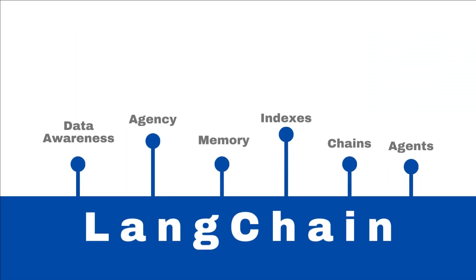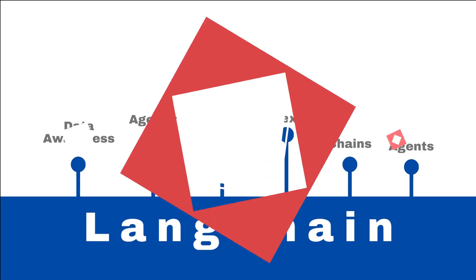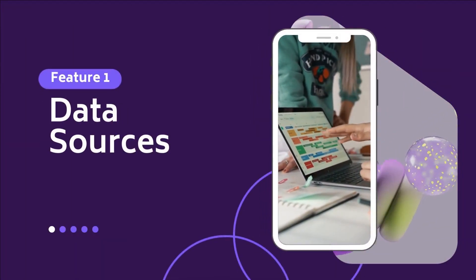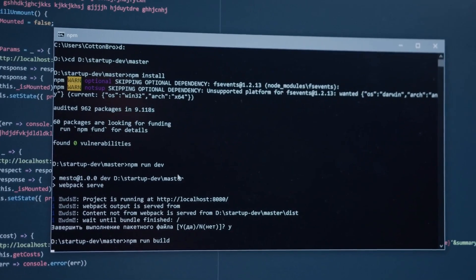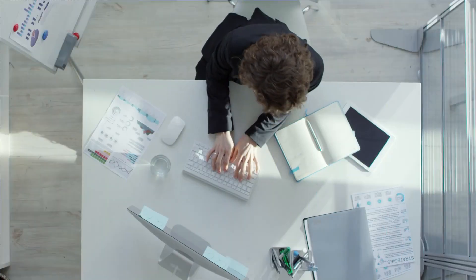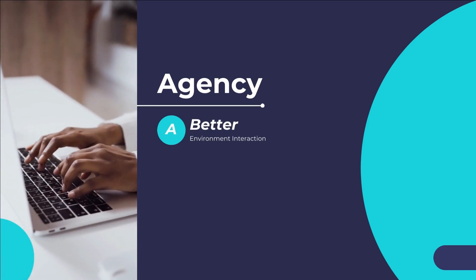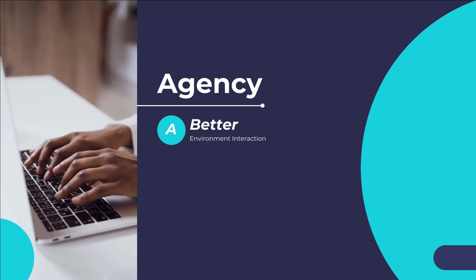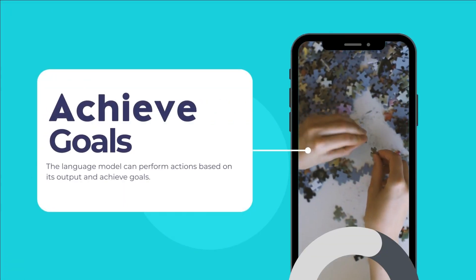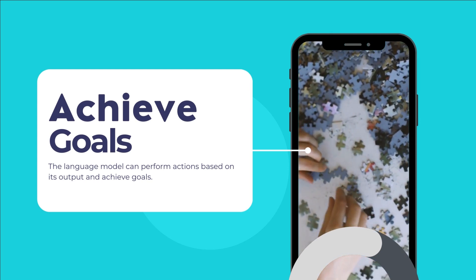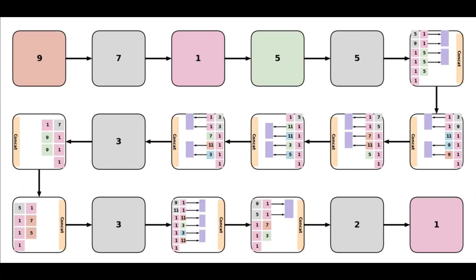LangChain aims to overcome these limitations by providing the following features. LangChain allows you to connect your language model to other sources of data such as databases, APIs, webpages, etc. This way your language model can access more information and provide better answers or suggestions. LangChain also allows you to enable your language model to interact with its environment such as sending emails, booking flights, playing games, etc., so it can perform actions based on its output and achieve goals.